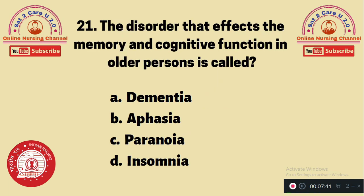Question 21: The disorder that affects memory and cognitive function in an older person is called — A. Dementia, B. Aphasia, C. Paranoia, D. Insomnia. The condition where cognitive function and memory are both impaired in old age is called dementia. The answer is A.